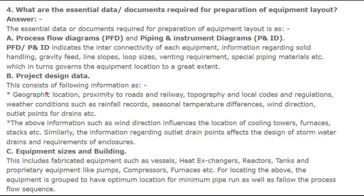Similarly, information regarding outlet drain points affects the design of storm water drains and requirements of enclosures. c. Equipment sizes and buildings — this includes fabricated equipment such as vessels, heat exchangers, reactors, tanks, and proprietary equipment like pumps, compressors, furnaces, etc. For locating the above, the equipment is grouped to have optimum location for minimum pipe run as well as to follow the process flow sequence.